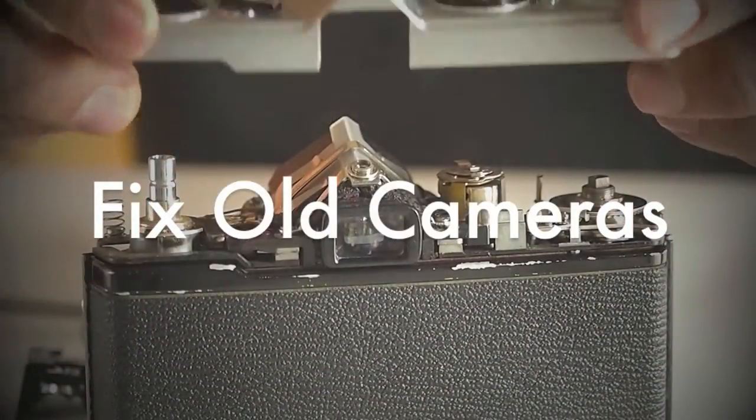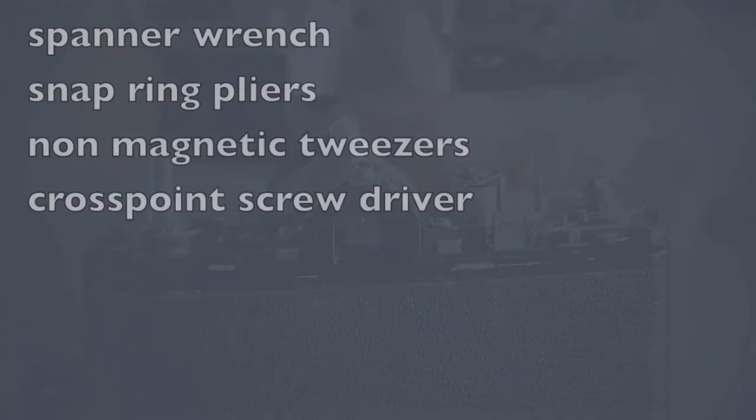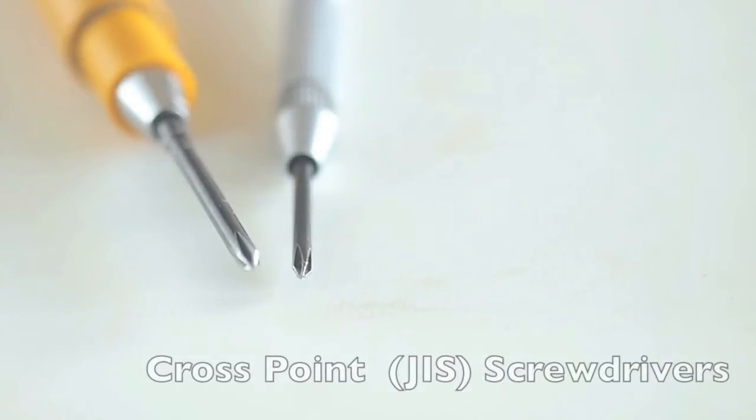To get started repairing your classic camera, you only need four basic tools. The cross-point screwdriver is essential in that the majority of classic cameras are manufactured using this screw. JIS, Japanese industrial standard cross-point screwdrivers, are different than Phillips screwdrivers shown here. If a Phillips screwdriver is used on a cross-point screw, the screw head could be damaged.